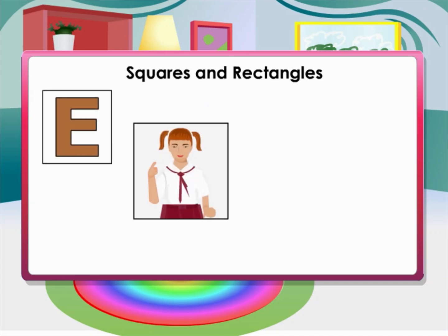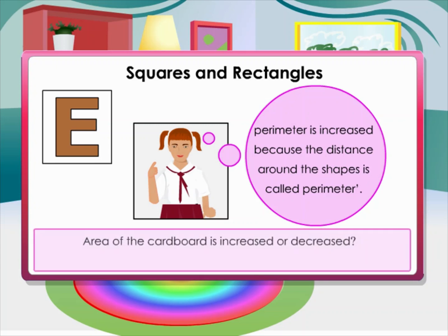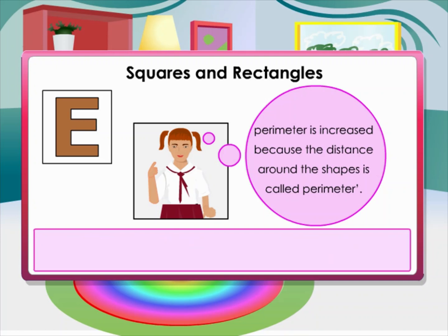She thinks: yes, obviously the perimeter has increased, because the distance around the shape is called the perimeter. The area of the cardboard has decreased. So an increase in perimeter need not lead to an increase in area.